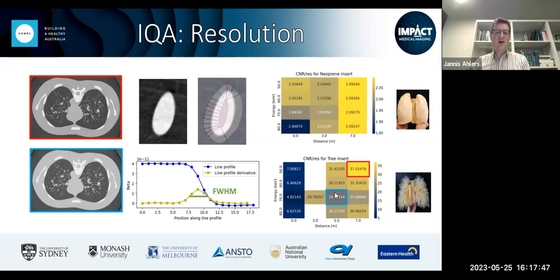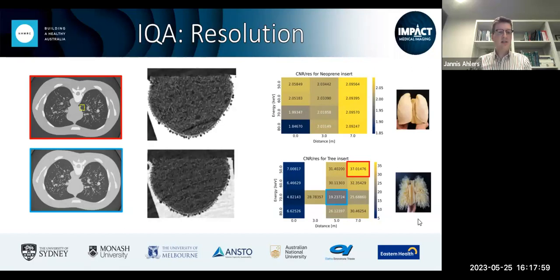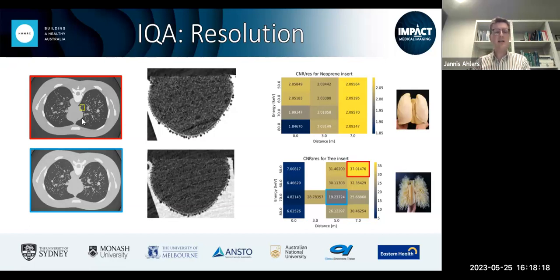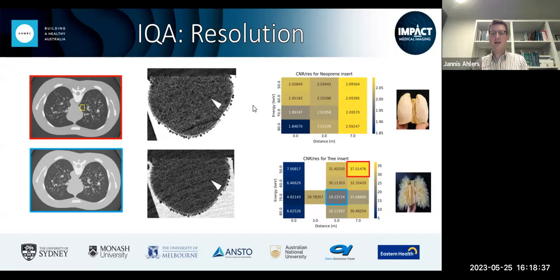Some very early results at different energies and propagation distances show CNR over resolution varies considerably — with some parameter combinations clearly among the best and worst. Looking at a small detail, what appears to be the aorta or some mediastinal structure filled with hard-set foam, you can see nice bubbles and features. The top image in the comparison is clearly better at resolving those fine details. This gives a flavor of the initial data from the lung imaging subproject of the impact grant.